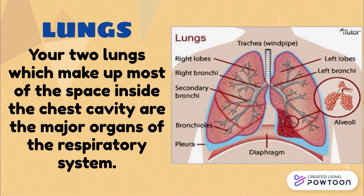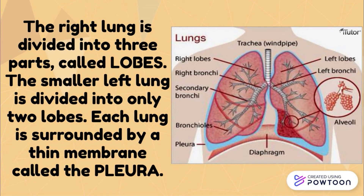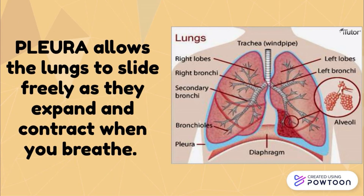Lungs. Your two lungs, which make up most of the space inside the chest cavity, are the major organs of the respiratory system. The right lung is divided into three parts called lobes. The smaller left lung is divided into only two lobes. Each lung is surrounded by a thin membrane called the pleura. Pleura allows the lungs to slide freely as they expand and contract when you breathe.